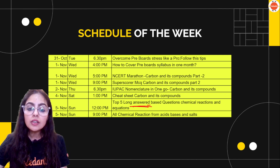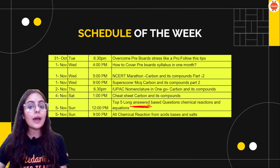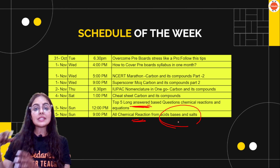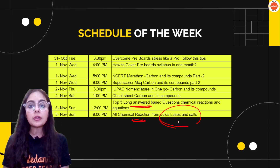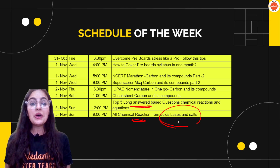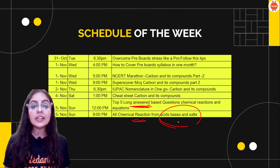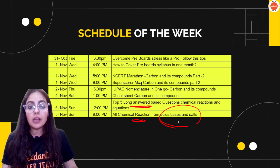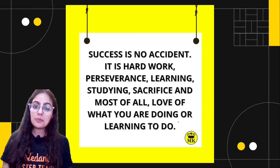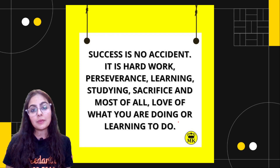Along with that, you'll also learn how to frame your answers. If you go through these top five long answer based questions of this chapter, then we will have all chemical reactions from acids and bases in one place — all chemical reactions from the entire chapter of acids, bases, and salts. So it's very simple for us to revise. You can also make a chart of all reactions, just like we'll be doing on Sunday at 9 PM.